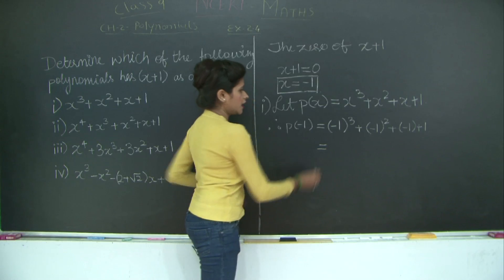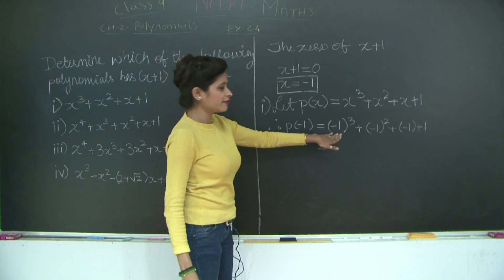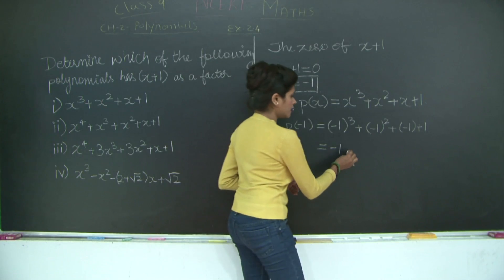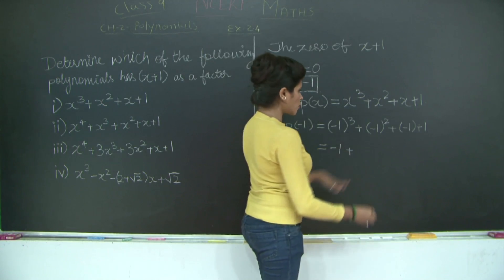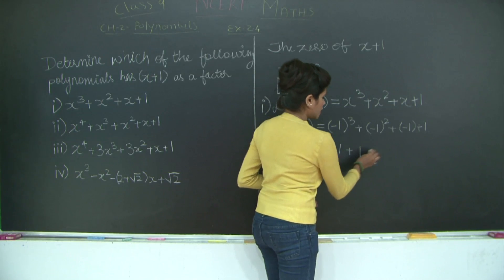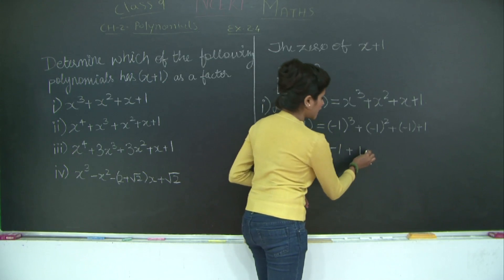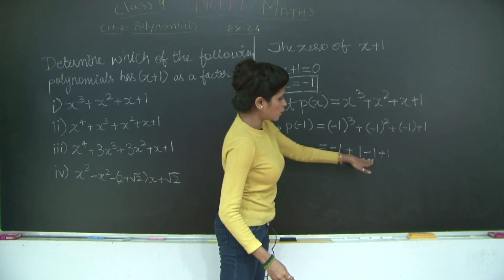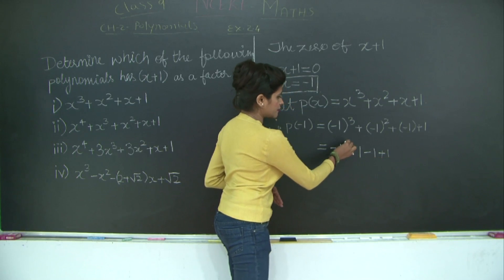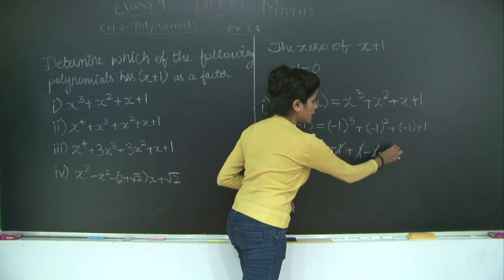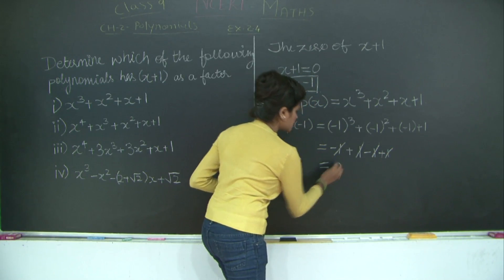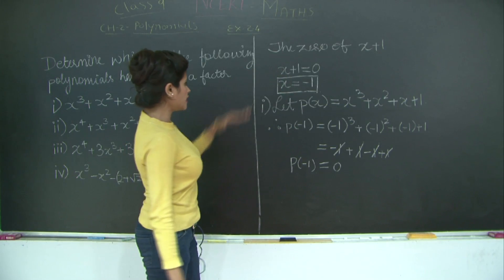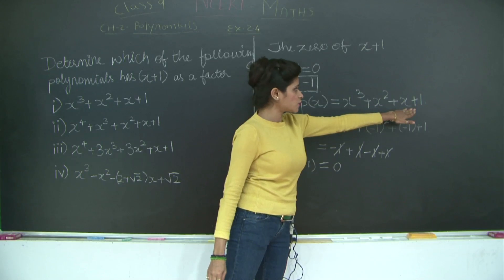The cube of a negative number is negative, so minus 1 cubed is minus 1. The square of a negative number is always positive, so minus 1 squared is 1. This gives us minus 1 plus 1 minus 1 plus 1. The minus 1 cancels with plus 1, and again minus 1 plus 1 cancels, so the answer is 0. Since p of minus 1 equals 0, we can conclude that x plus 1 is a factor of p(x) = x³ + x² + x + 1.